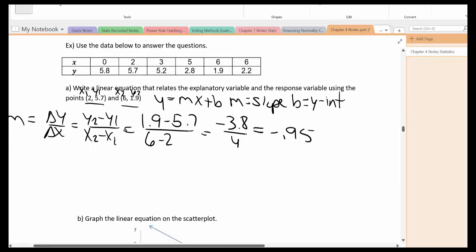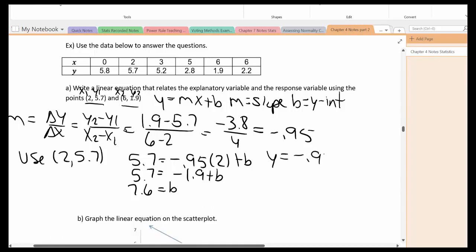Once I have the slope I can pick an ordered pair. I'm going to use the first ordered pair 2 and 5.7. So plug in y is 5.7, slope is negative 0.95, the x in this case is 2 plus b. Solve for b. I can add 1.9. That gives me 7.6 equal to b. So my equation would be this.